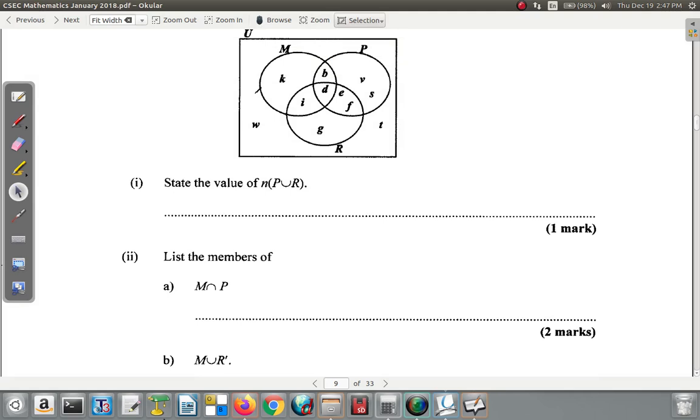M union R complement - first write what is in M. M is b, d, i, and k. What about R complement? Remember, complement means outside of - what is not in R. R complement is what is outside of R.